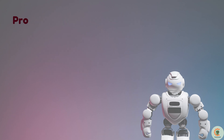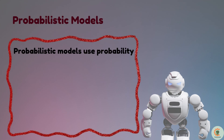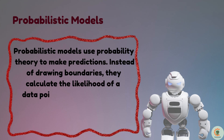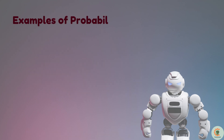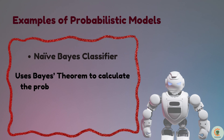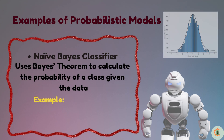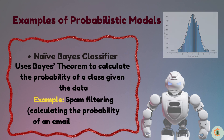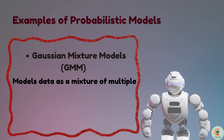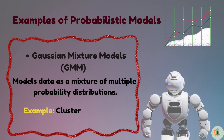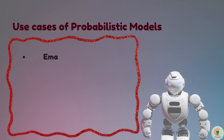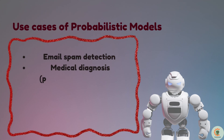Probabilistic models use probability theory to make predictions. Instead of drawing boundaries, they calculate the likelihood of a data point belonging to a class. Examples include: Naive Bayes classifier, which uses Bayes' theorem to calculate the probability of a class given the data (e.g., spam filtering — calculating the probability of an email being spam); and Gaussian Mixture Models, which model data as a mixture of multiple probability distributions (e.g., clustering customers based on spending behavior). Use cases: email spam detection, medical diagnosis for predicting diseases, and natural language processing for speech recognition.